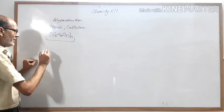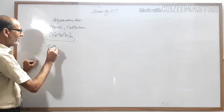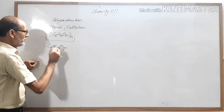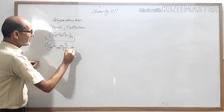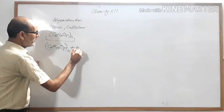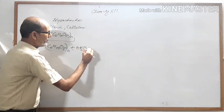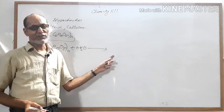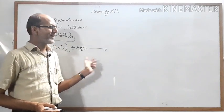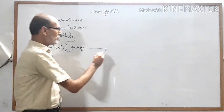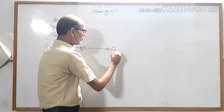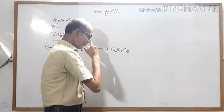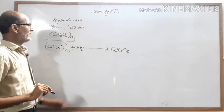What will happen if starch undergoes hydrolysis? (C6H10O5)n, when it undergoes hydrolysis in the presence of an enzyme, will first convert into dextrin, and finally dextrin will convert into glucose molecules.